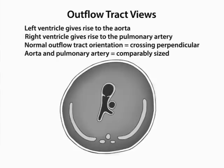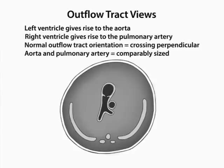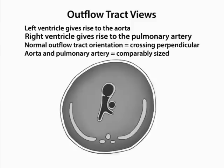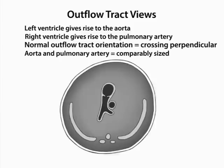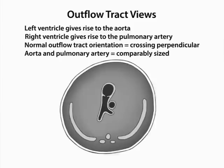Together, outflow track views show the left ventricle giving rise to the aorta, the right ventricle giving rise to the pulmonary artery, show normal orientation — that is, perpendicular crossing of the two outflow tracks — and show comparably sized aorta and pulmonary artery.